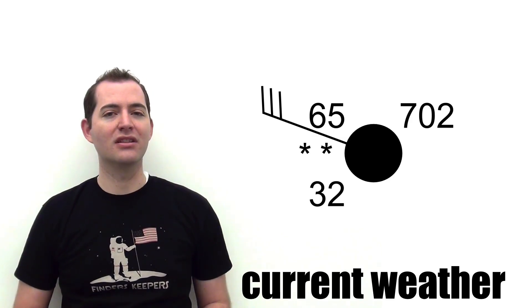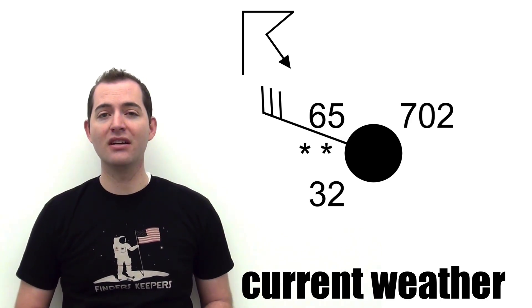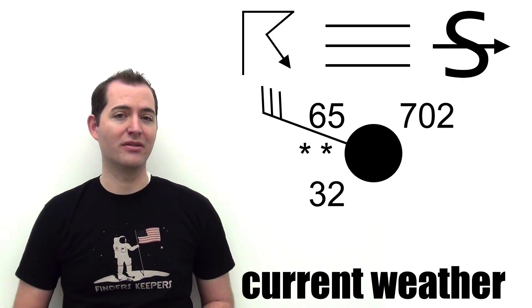Other symbols include those for thunder and lightning storms, fog, or even sand or dust storms.